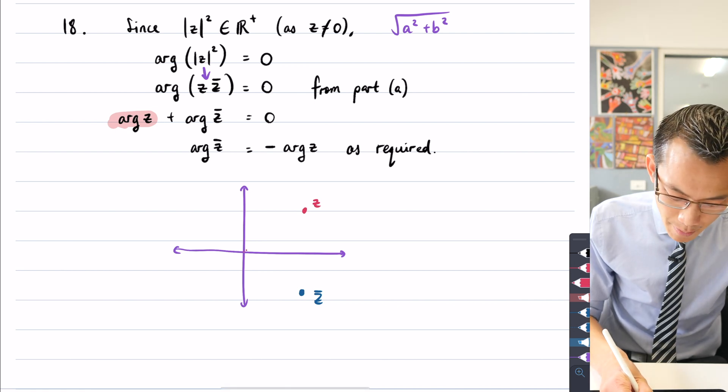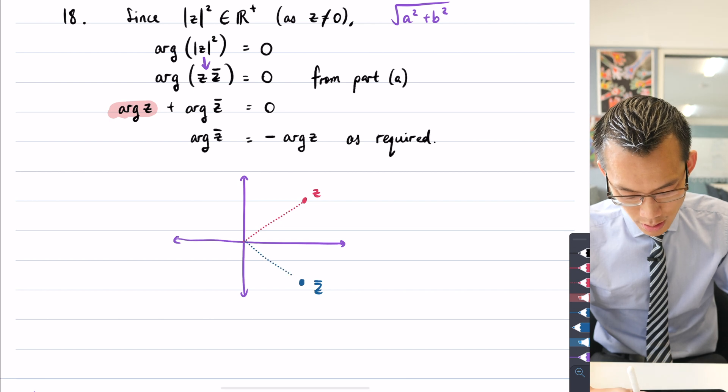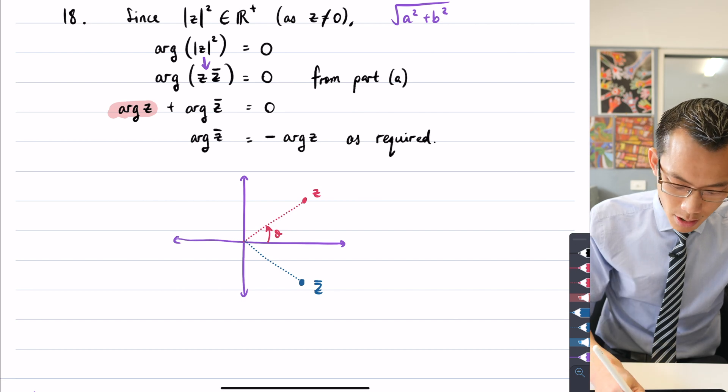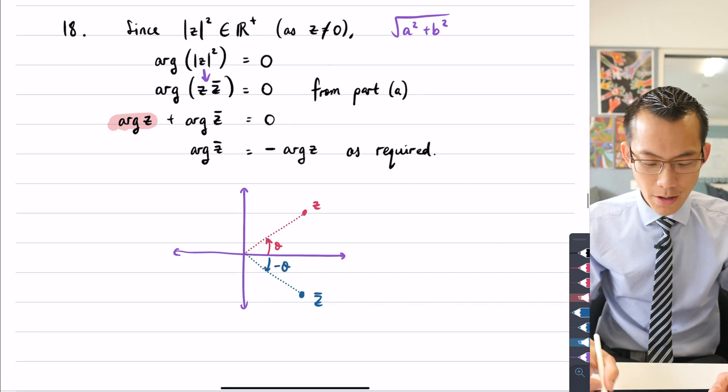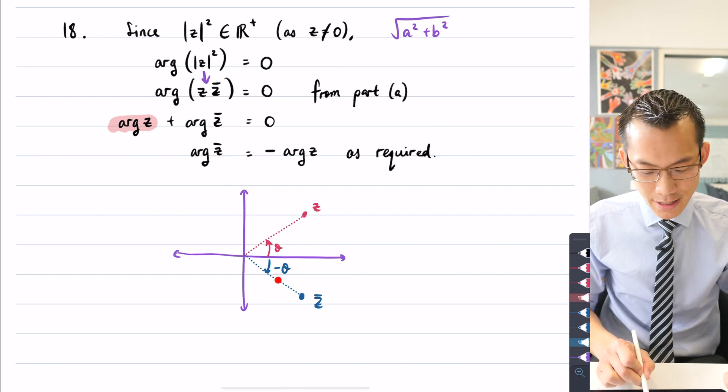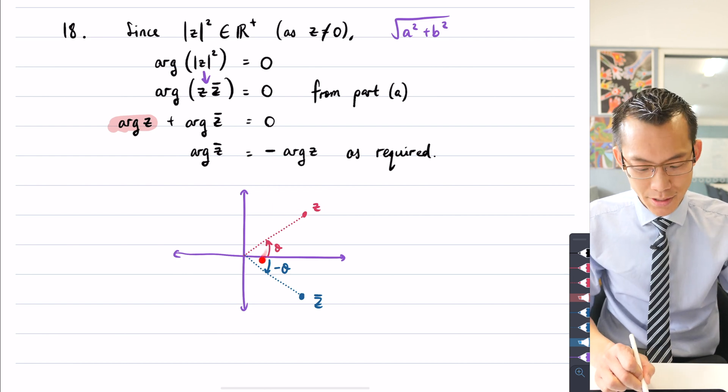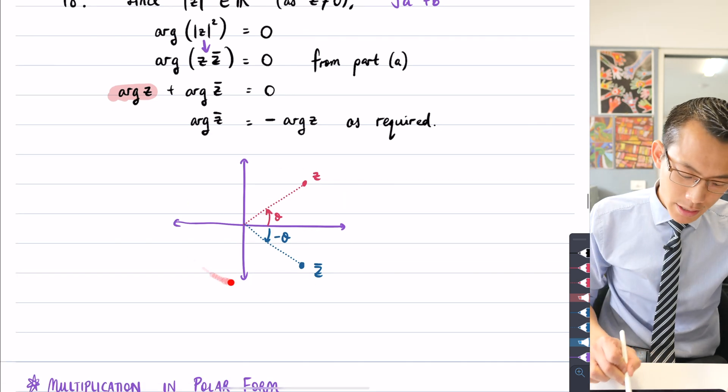So then when I think about, well, what direction am I facing in to be going up to that complex number versus going to this complex number, you can see, well, if this is theta, then this angle down here will be the same size but in the opposite direction, which is to say the argument of the conjugate, which is this angle down here, is the same as going to the original number but minus. So instead of going up that way, I'm going to go down that way.